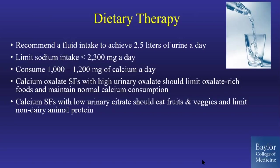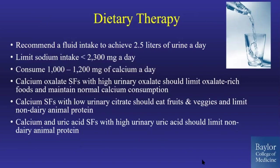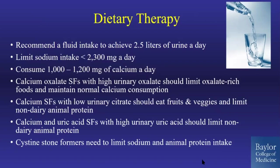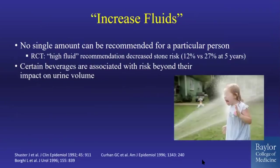Calcium stone formers with low citrate should eat fruits and vegetables and limit their animal protein. Both calcium oxalate and uric acid stone formers with high uric acid should decrease animal protein. There is a randomized controlled trial showing that high fluid intake resulted in 12% stone recurrence at five years versus 27% in the control group, clearly demonstrating that pushing fluids makes a difference.